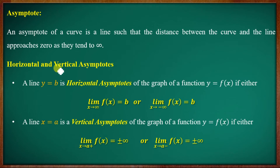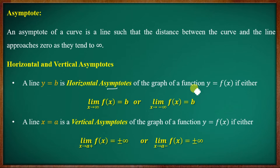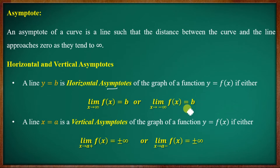Asymptotes of a curve can be horizontal or vertical. For the horizontal asymptote: a line y equal to b is the horizontal asymptote of the graph of a function y equal to f of x if either the limit as x tends to infinity of f of x equals b, or the limit as x tends to minus infinity of f of x equals b.